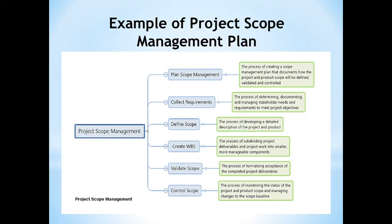Lastly, we have control scope: the process of monitoring the status of the project and product scope and managing changes to the scope baseline. This is where we see how to effectively control changes that might happen to the scope management plan and how to manage those changes.